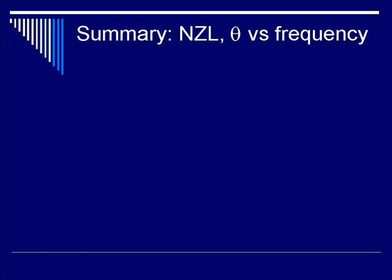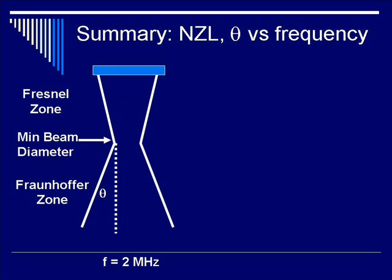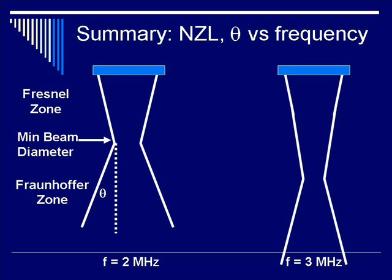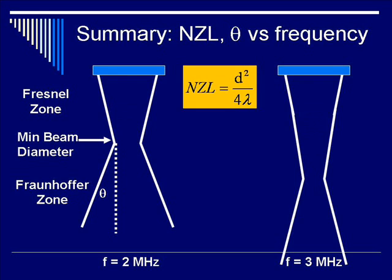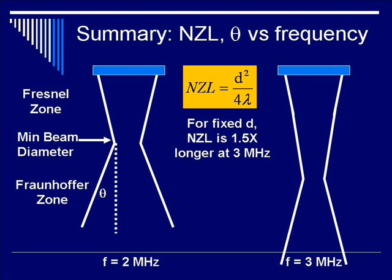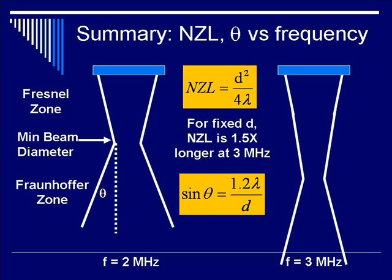Let's summarize the dependence of NZL on frequency and beam diameter. At 2 MHz there is a certain beam profile; increasing frequency to 3 MHz causes NZL to increase. Since NZL is inversely proportional to lambda, and higher frequency means smaller lambda, NZL increases by 1.5 times at 3 MHz compared to 2 MHz. For beam divergence, sine theta is proportional to lambda and inversely proportional to D; so increasing frequency decreases lambda, therefore sine theta and theta both decrease.